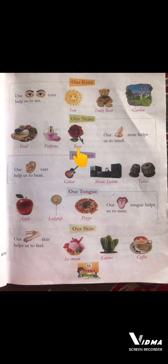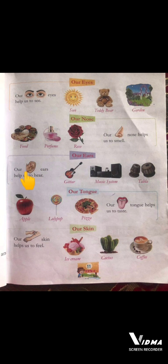Third sense organ: O-U-R, Our, E-A-R-S, Ears. Ears means hamare kaan. Our Ears.